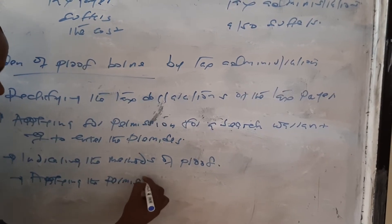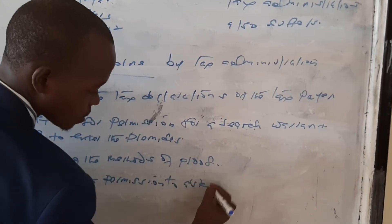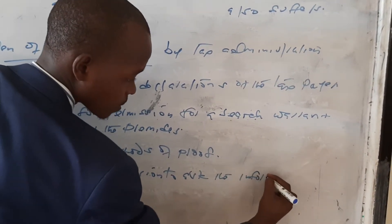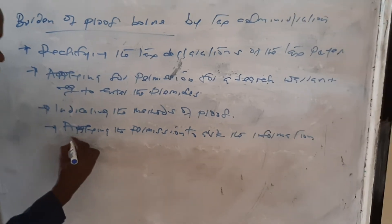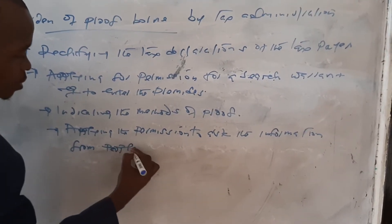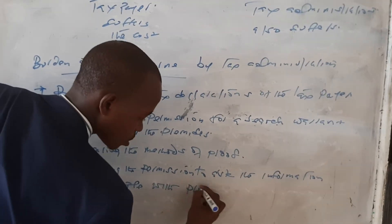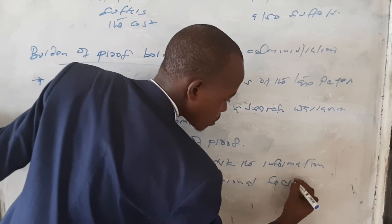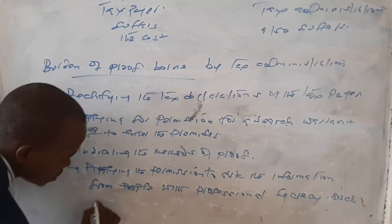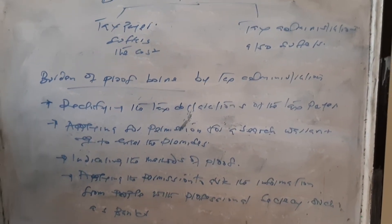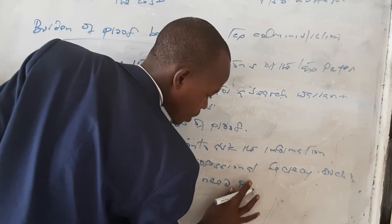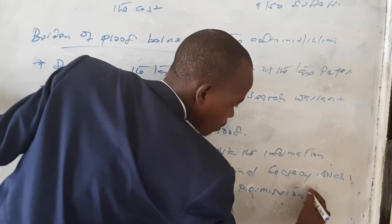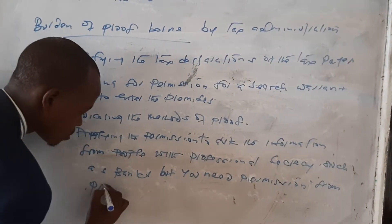Another burden is applying for permission to ask for information from people bound by professional secrecy, such as banks. For this, you need permission from a prosecutor.